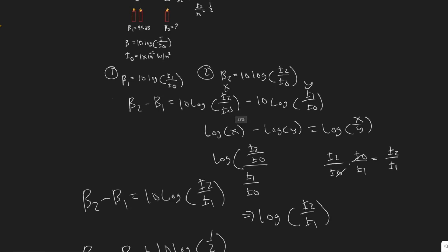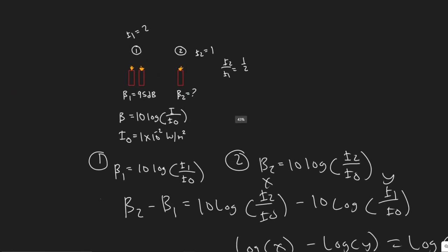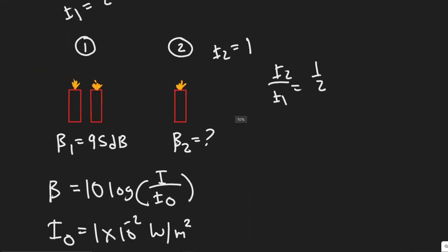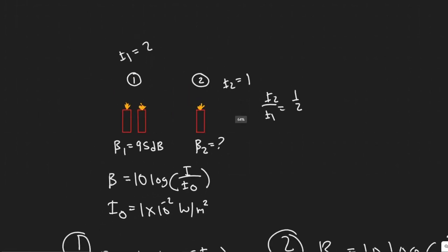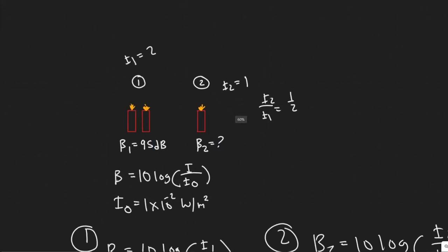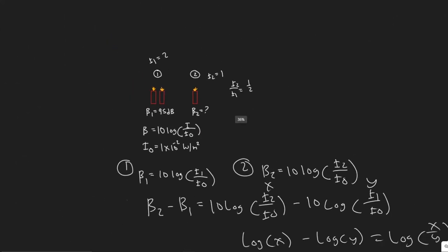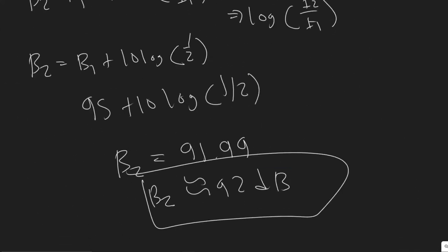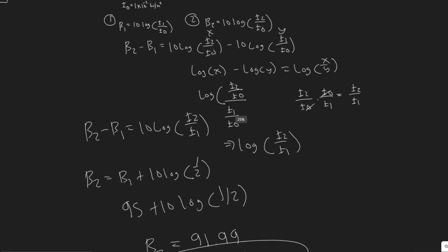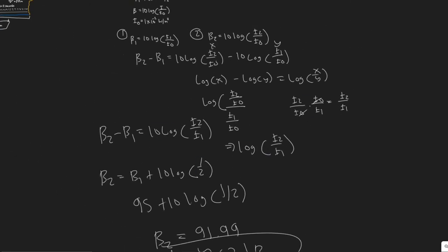Another trick: if you know the intensity is halved, it always drops by three decibels. So you could do this in your head — half the intensity means minus three decibels, giving you 92. That's the shortcut, but I wanted to show you how we actually derive it through the equations.